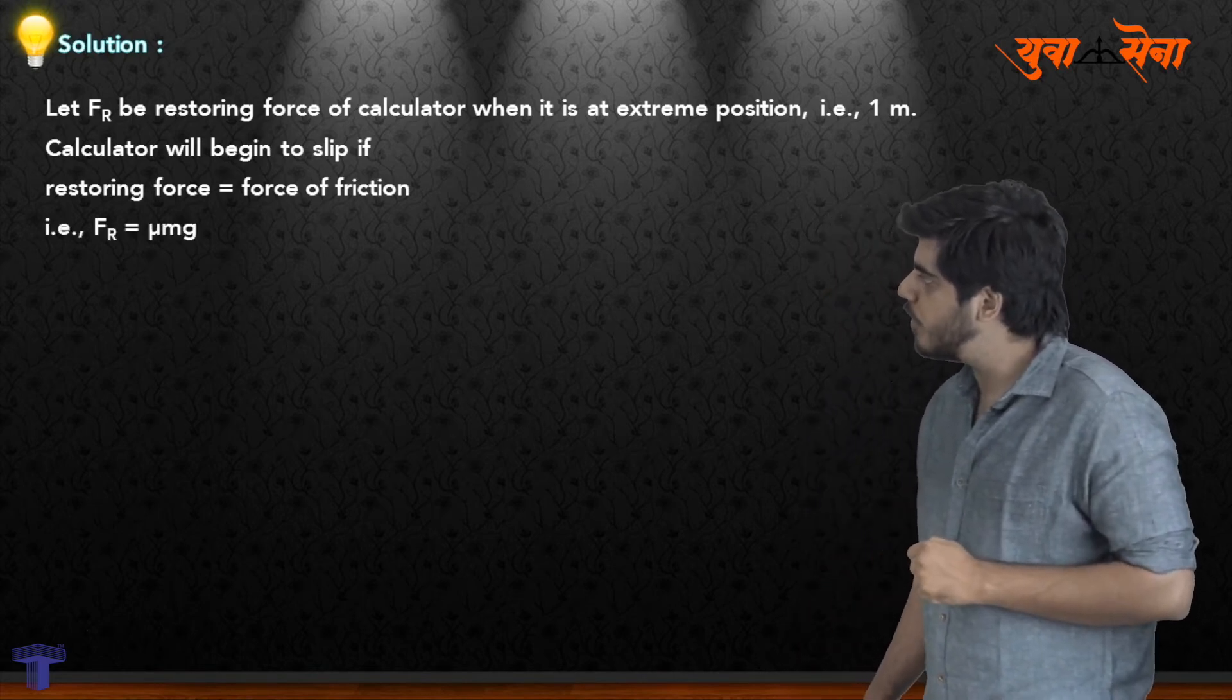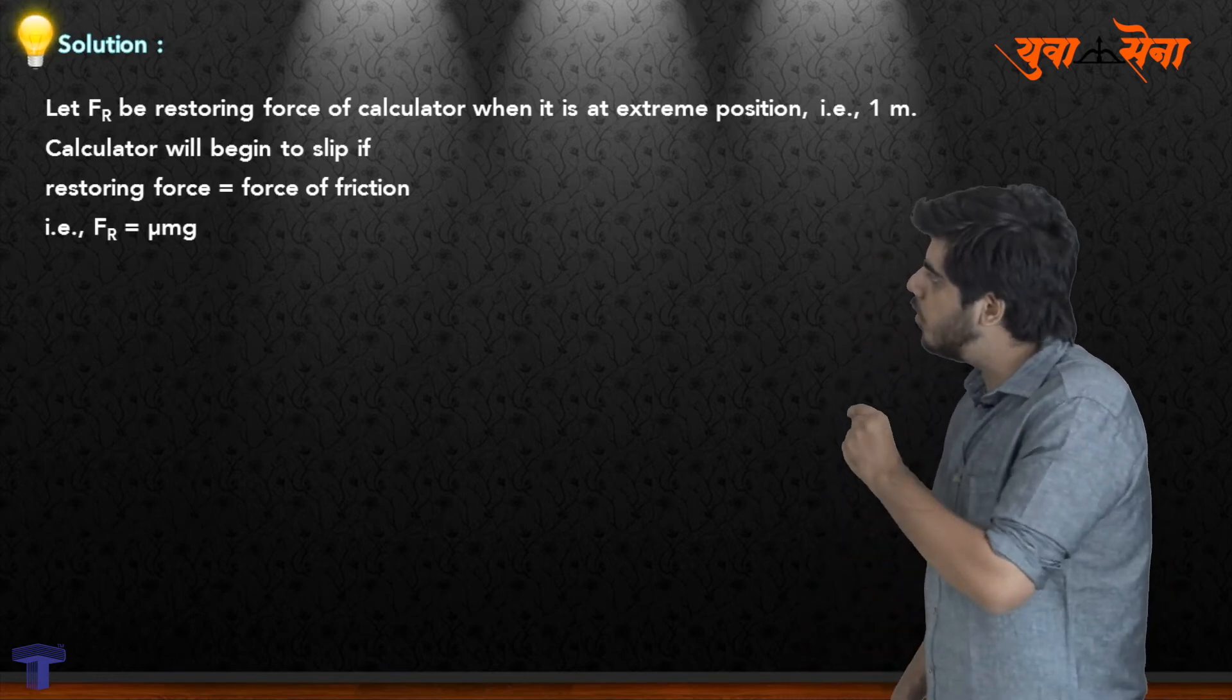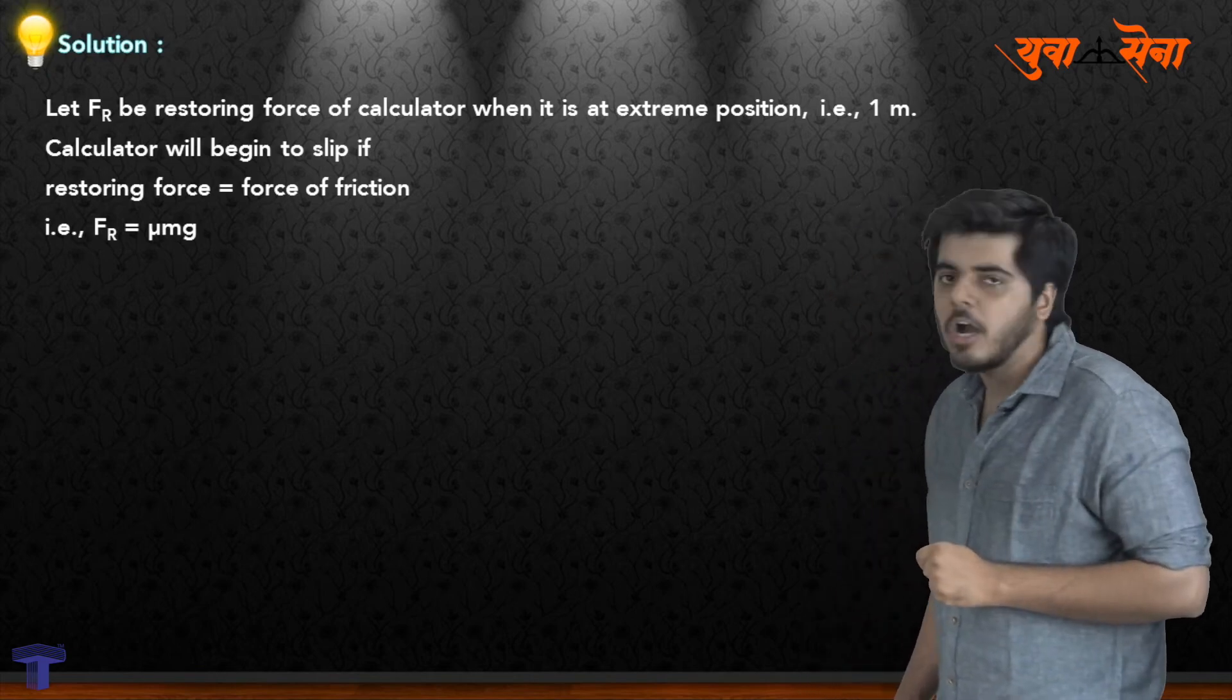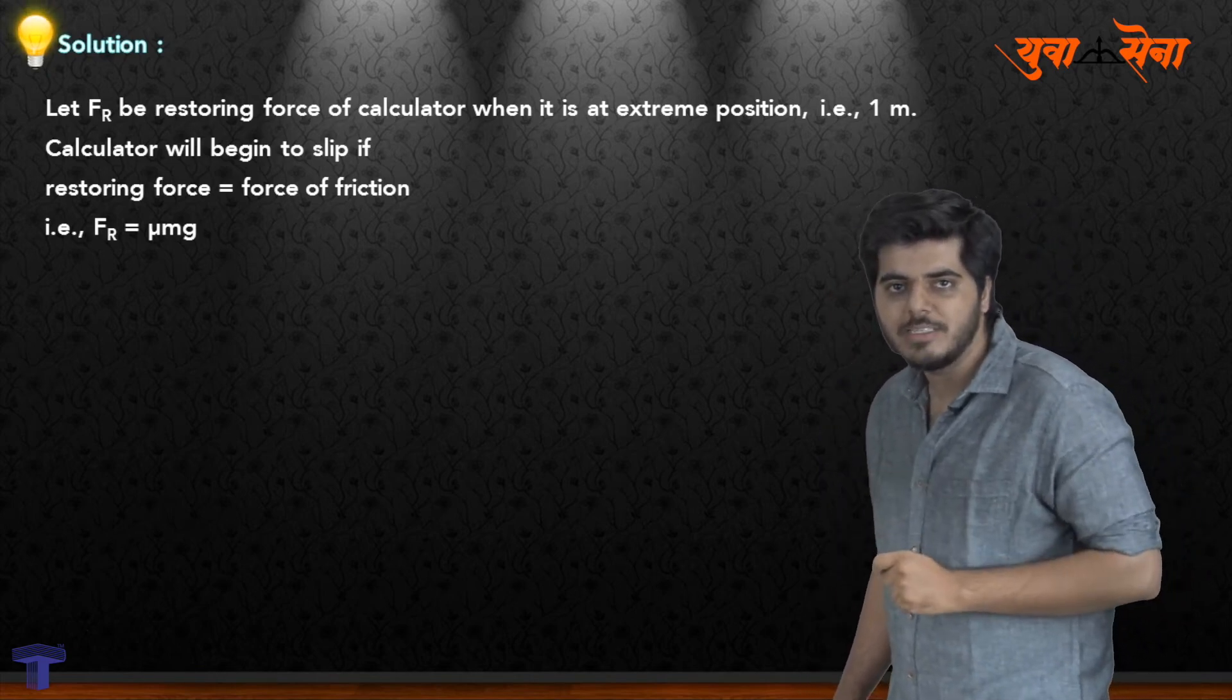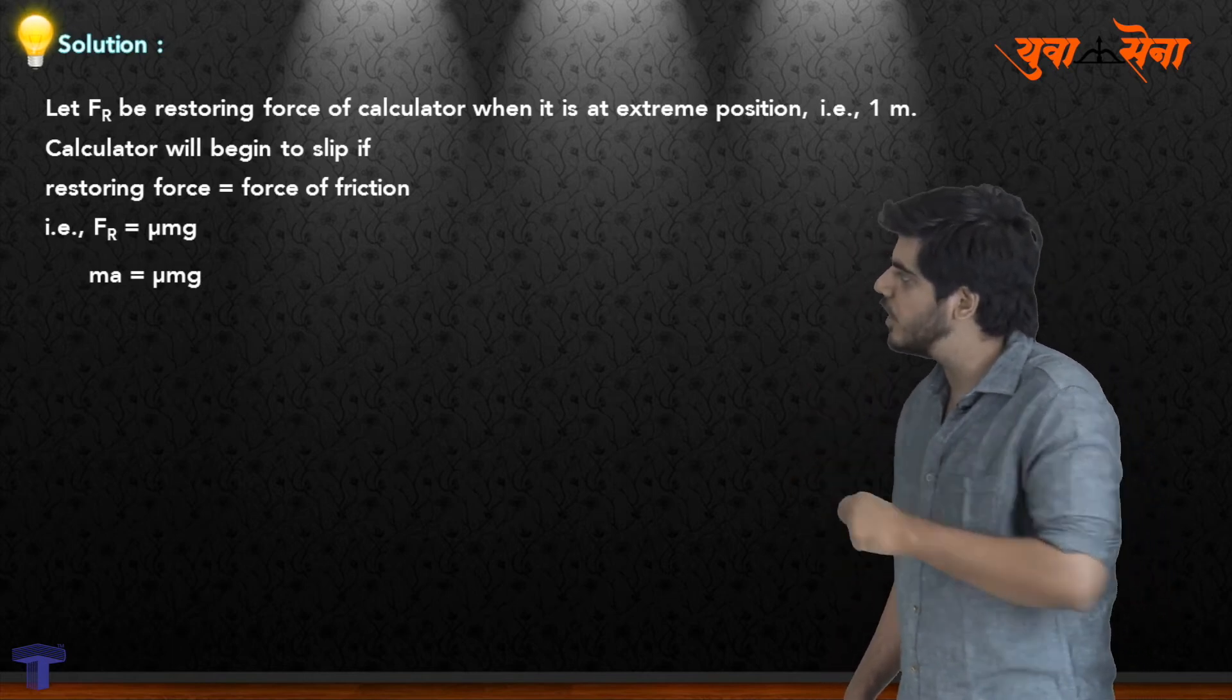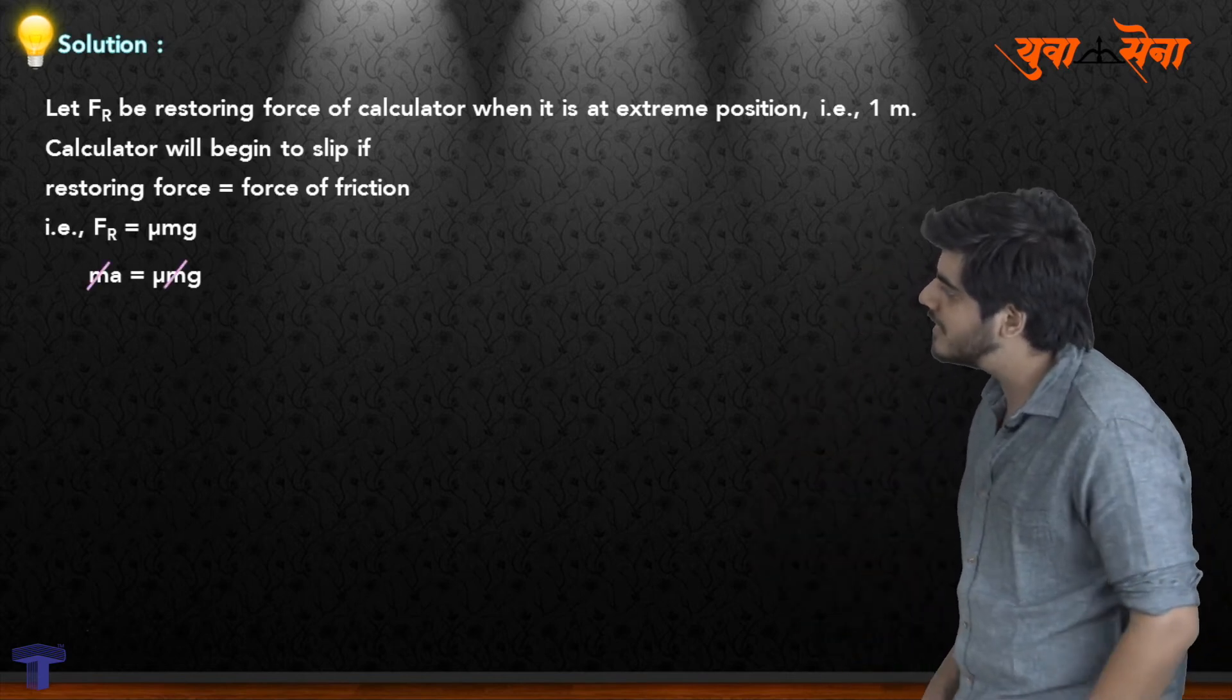Restoring force equals force of friction. F_R equals mu times m times g. According to the basic relation, force equals mass times acceleration, so mass times acceleration equals mu m g. The mass cancels out, giving us the formula: acceleration a equals mu times g.